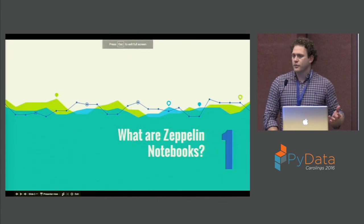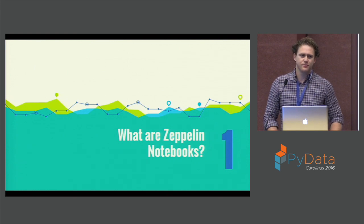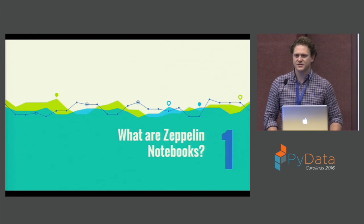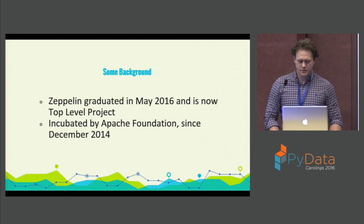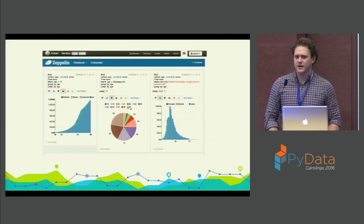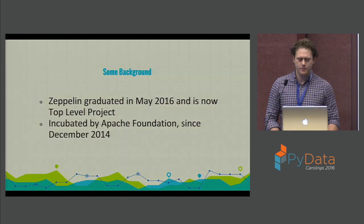A question I get a lot is: what are Zeppelin notebooks? We have Jupyter notebooks that everyone is pretty familiar with. RStudio has started their notebooks, and those are kind of the big ones. Zeppelin notebooks are looking to be the all-in-one notebook — a dashboard, WebSocket that you can use to share data. It can have interpreters for both big and small data solutions, and it's pretty flexible, but it's a little rough at the moment.